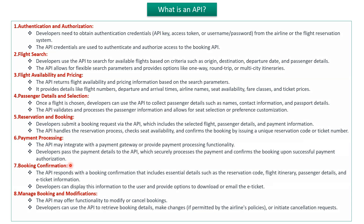The seventh one is the booking confirmation related API. This API responds with a booking confirmation that includes essential details such as reservation code, flight itinerary, passenger details, and e-ticket information. Developers can display this information to the user and provide options to download or email the e-ticket.